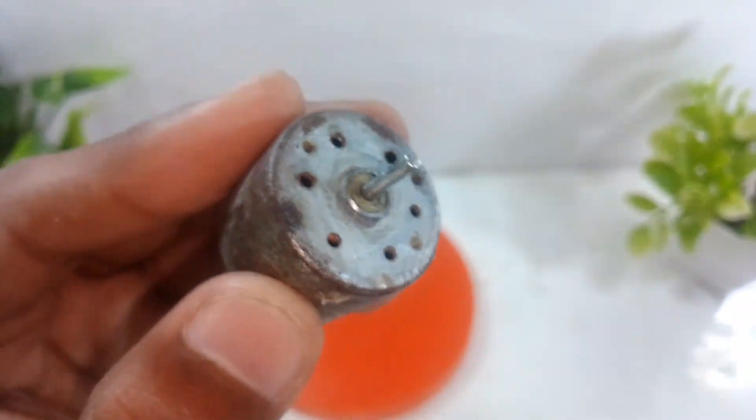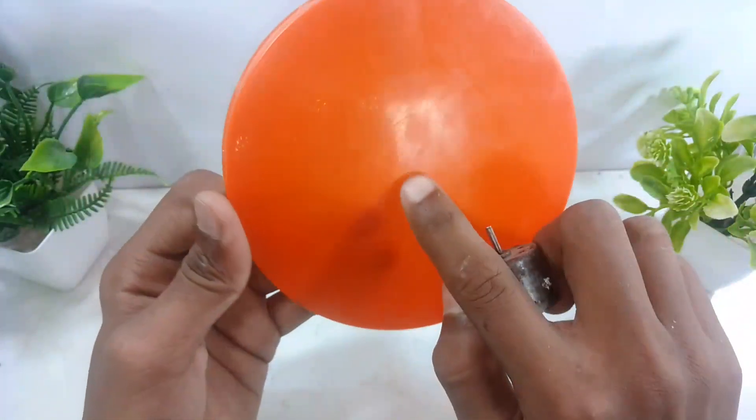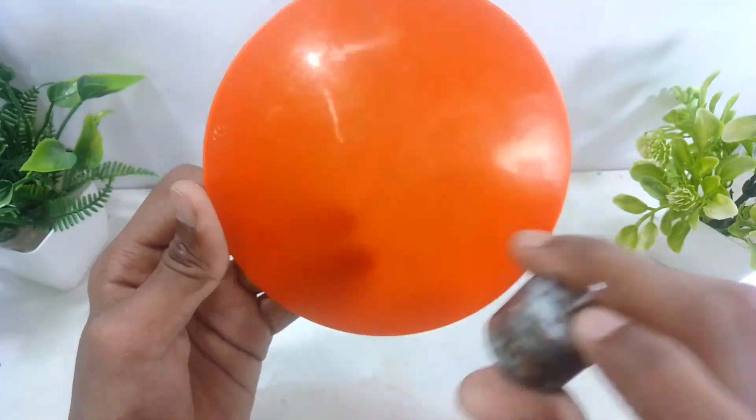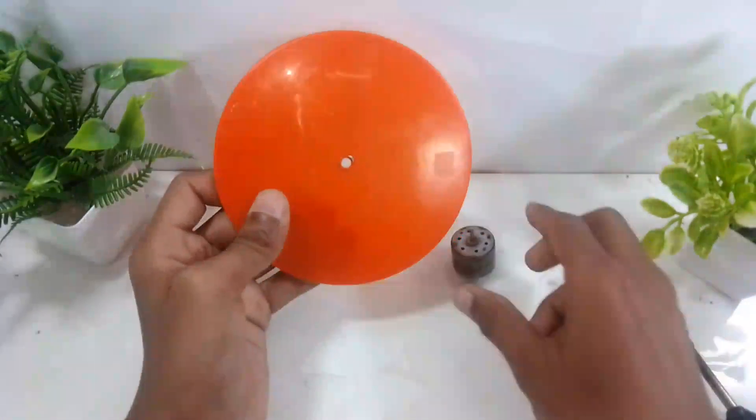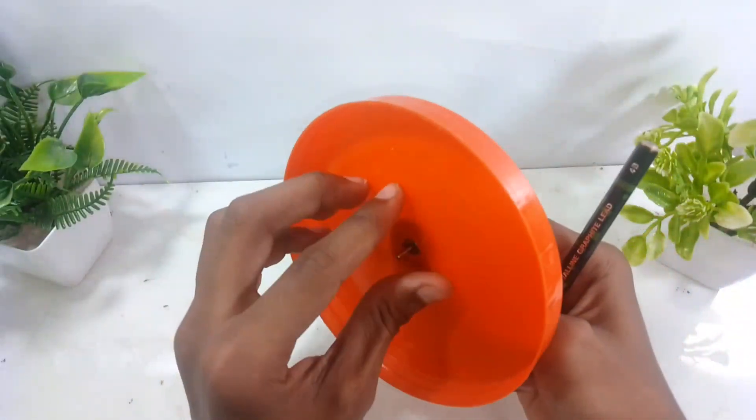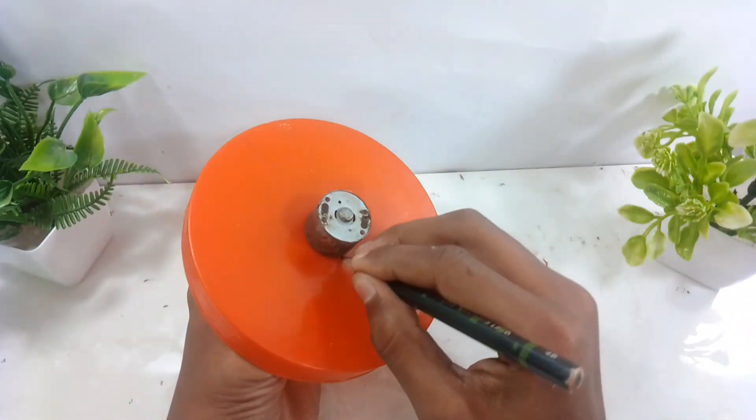you can see that there is a ring under the DC motor, so we have to hold this ring on the midpoint, so I will do it quickly. Then we have to keep the motor in the cap and then we have to draw it in the outline.